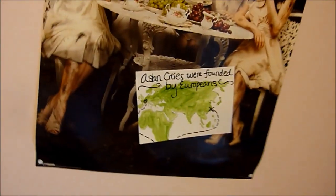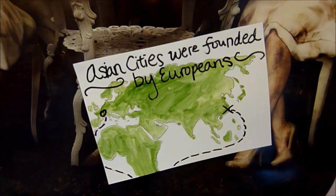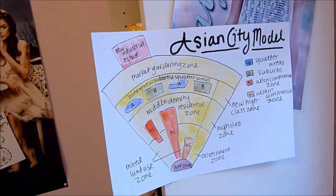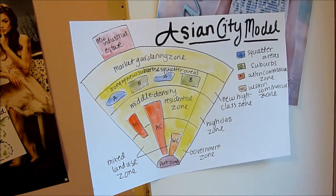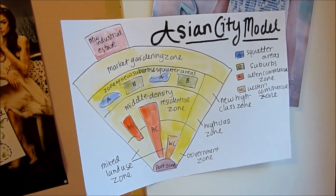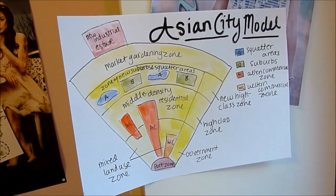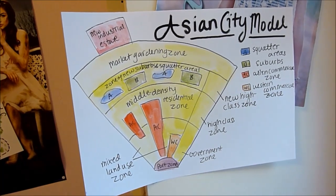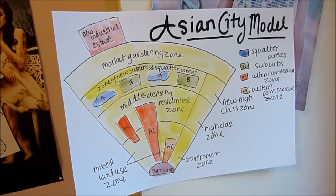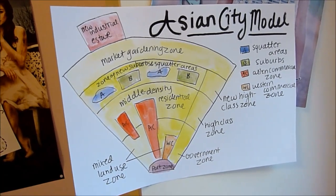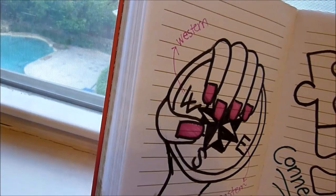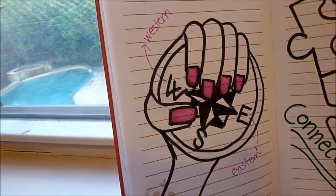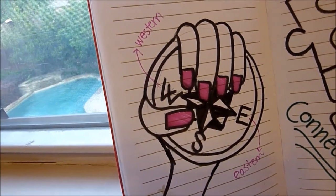Since many of the large Asian cities were founded by Europeans, they tend to follow the European model of spatial arrangements. Most large cities are centered around ports, with a western-style CBD surrounding it. A spine of high-class residences branches out from the port, and there is a large zone of mixed residences, businesses, and light industries. Most of the city's population can be found in the peripheral slums on the outskirts of the cities. This model demonstrates the great influence that western societies have on many eastern cities' urban land use, shaping their port cities to roughly follow the same layout.